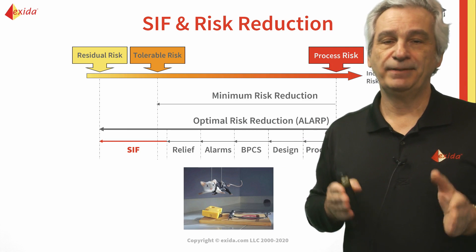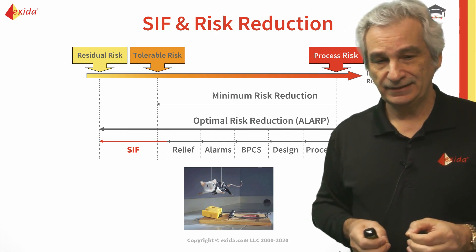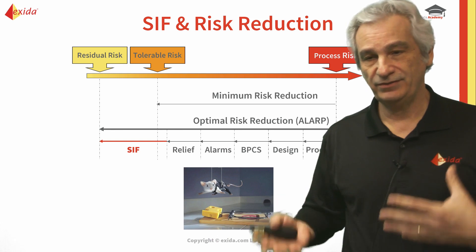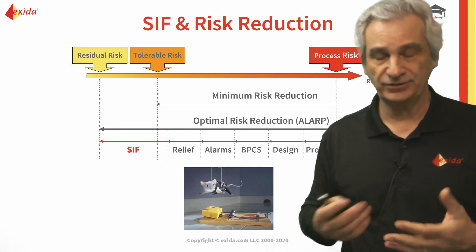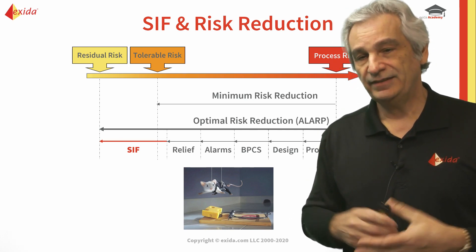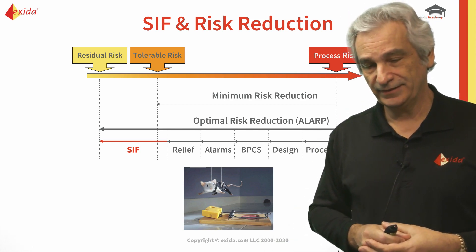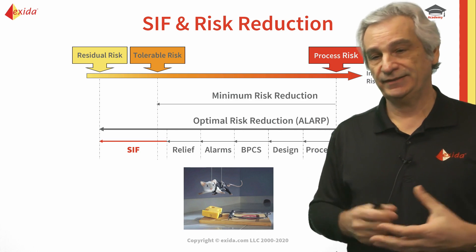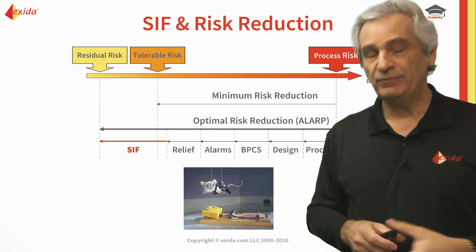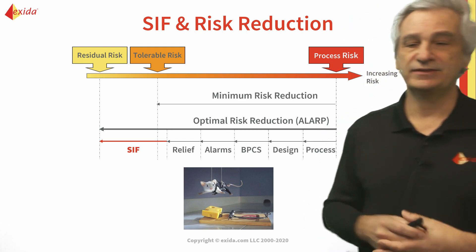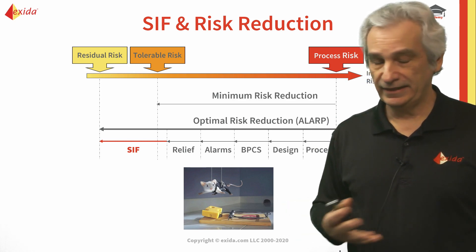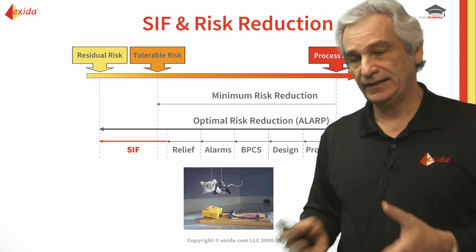Then of course we have our Basic Process Control System, our BPCS. This is our fundamental layer of protection for making sure that the process is within normal operating parameters in terms of temperature, pressure, etc. - this should keep everything running correctly. Then we might have some process alarms that enable operators to intervene to correct any deviation from normal parameters. Then we might have some form of mechanical relief for high pressure scenarios - that could be relief valves, rupture discs, etc. And then we'll have a Safety Instrumented Function potentially to get us to where we want to be.